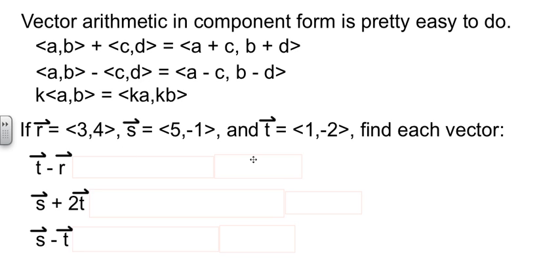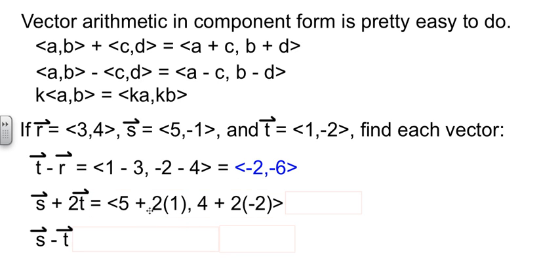So let's do a couple here. We've got three vectors, r, s, and t. They want us to do t minus r. So we'll take the t values minus the r values. 1 minus 3, -2 minus 4, gives me a vector of <-2, -6>. Let's do s plus 2t. We'll take s plus twice what t is. So 5 plus 2 times 1, 4 plus 2 times -2. Arithmetic cleanup gives me <7, 0>. And finally, let's just do s minus t. That'll be the s values minus the t values. And arithmetic gives me <4, 1>.